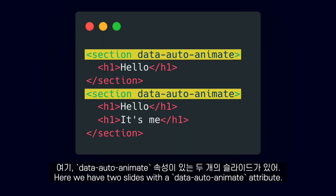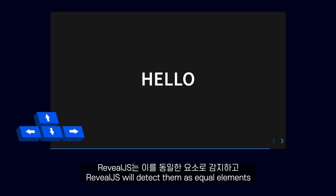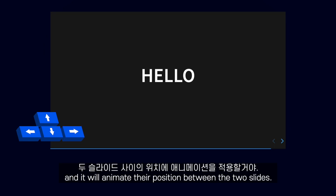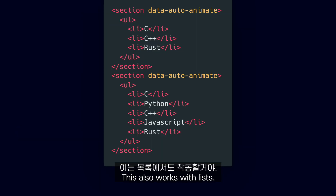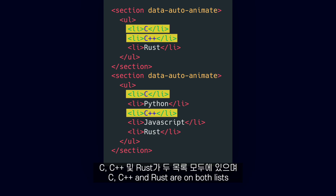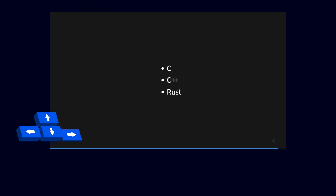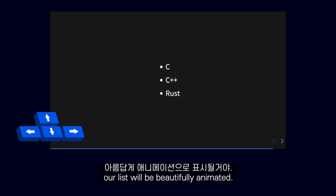Animating elements between slides is super easy. Here we have two slides with a data auto animate attribute. Because both of these slides have an H1 that says hello, Reveal.js will detect them as equal elements and it will animate their position between the two slides. This also works with lists. Here we have two slides with two lists — C, C++, and Rust are on both lists, and both slides have the data auto animate attribute. So now when we go to the slides, our list will be beautifully animated.